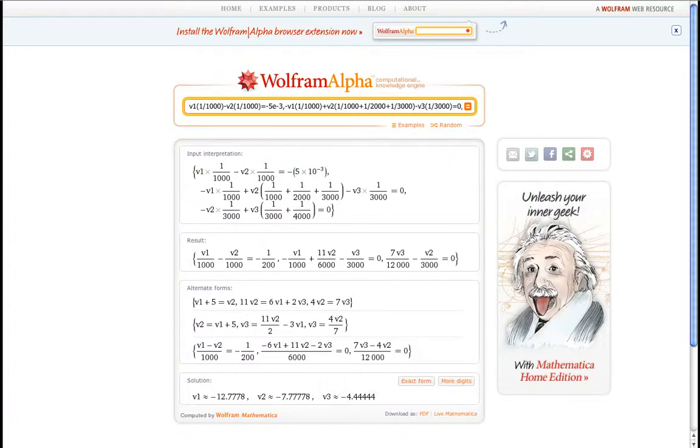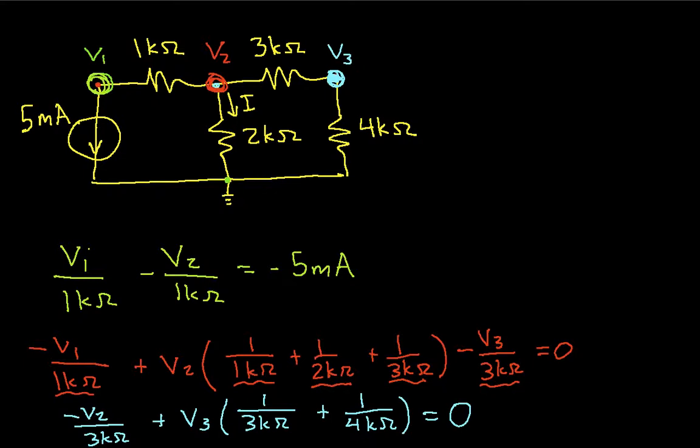Okay, so I go back to my original drawing, and we can say now that V1 is minus 12.78 volts, V2 is minus 7.78 volts, and V3 is minus 4.44 volts. They should all have volts after them. Okay, so that tells us the node voltages. Again, these node voltages are the voltage between that node and our reference node.